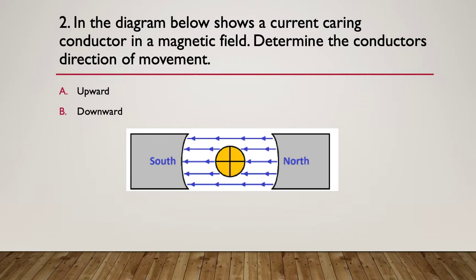Question two, in the diagram below shows the current carrying conductor again in a magnetic field. Determine again the conductor's direction of movement, up or down.